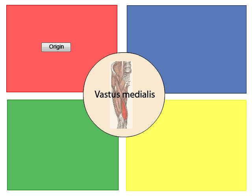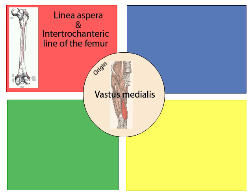Click on the origin button to continue. The origin of the vastus medialis is the linea aspera, a roughened surface on the posterior aspect of the femur. The vastus medialis wraps around the body of the femur from posterior to anterior.